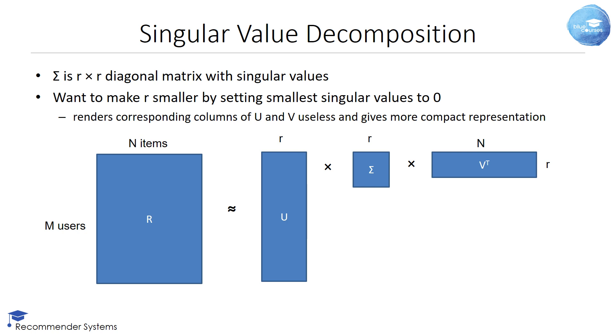As said, Sigma is an R times R diagonal matrix with the singular values. Some of these singular values will be exactly 0 depending upon the rank of the rating matrix R. Typically, there will be some big singular values and some smaller ones.